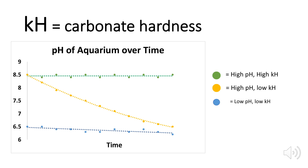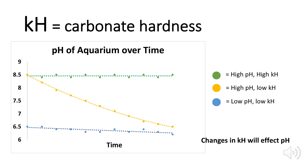However, for some tanks, you may want to have a low KH, and this is because you want to have a lower pH value for some types of fish. Ultimately, KH will always have some relation to pH, as changes in KH will always cause changes in pH.